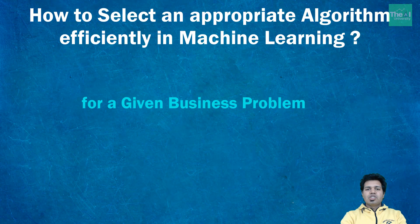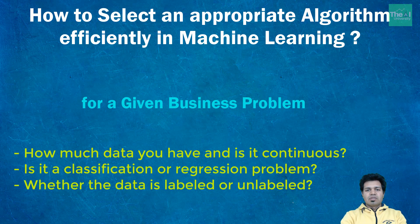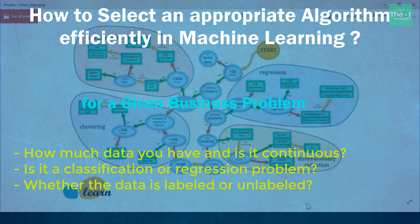When we look at machine learning algorithms, there is no one solution or one approach that fits all. Choosing a machine learning algorithm can sometimes be a very confusing and daunting task because it depends on a number of factors. I'm going to take an algorithmic approach to pick an appropriate algorithm, so you no longer have to worry about which algorithm to pick for a particular business problem.